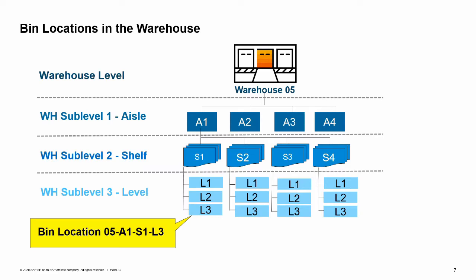One option to improve logistics of warehouse processes is to implement bin location management. Bin location management helps you keep track of the items in a warehouse down to the physical bins that store the items. Using bin location management can help you optimize storage space, quickly locate items, and plan out efficient routes for picking.